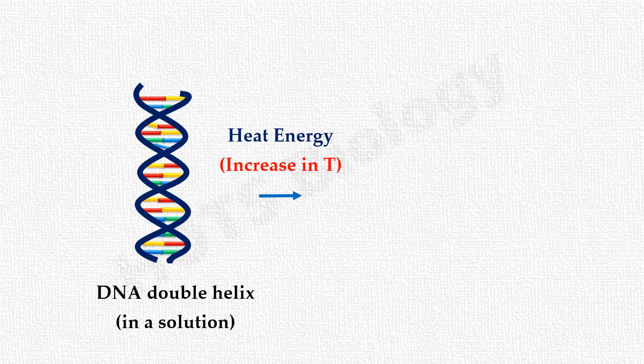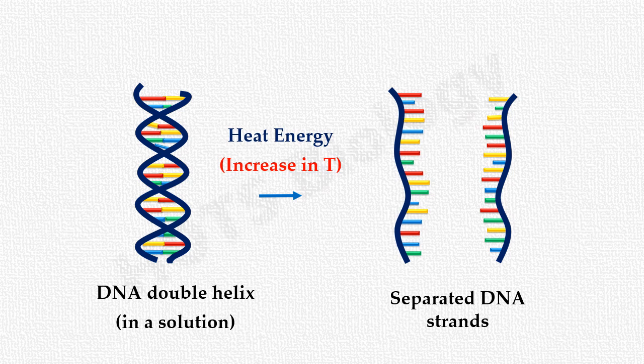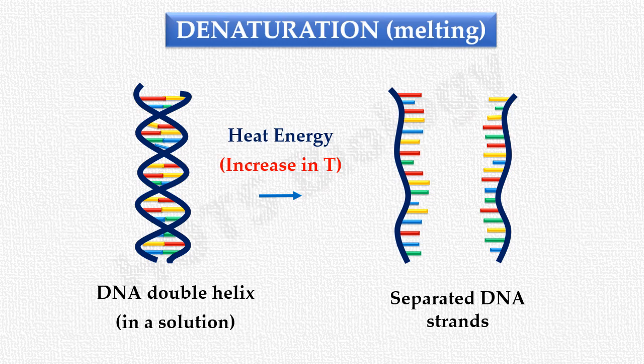Let's suppose a DNA solution is heated. As a result, hydrogen bonds are disrupted and the double-stranded DNA separates into single strands. This separation of DNA strands is known as denaturation, or melting.